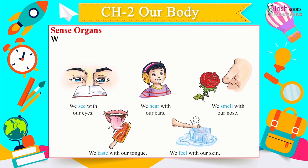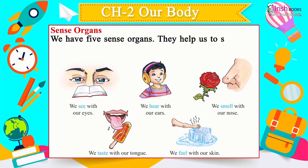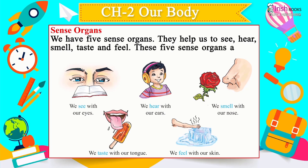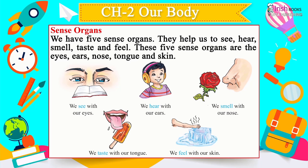Sense Organs: We have five sense organs — eyes, ears, nose, tongue and skin — that help us to see, hear, smell, taste and feel. We see with our eyes, hear with our ears, smell with our nose, taste with our tongue, and feel with our skin.